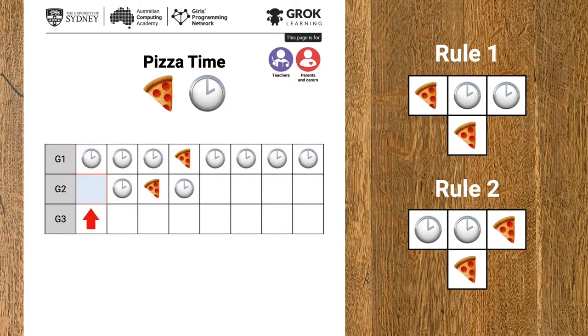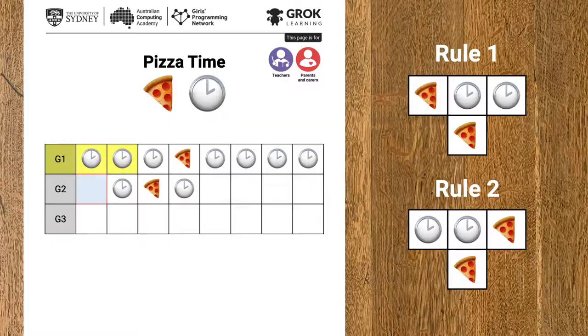Now we've hit the end of the row. The squares above are clock, clock, end of row. What do we do now? Well here we need another simple rule: we always pretend that off the edge of a row it's always the base emoji, which in this case is the clock. So all the way down, each generation, off the edge, it's a clock. So that means that above this square we have clock, clock, clock — and that's not one of the rules, so this square also has to be a clock.